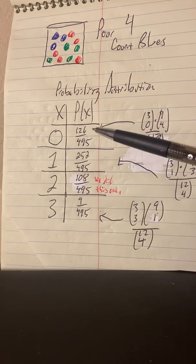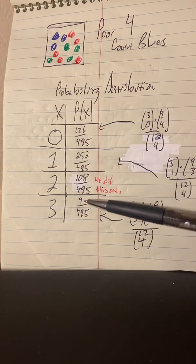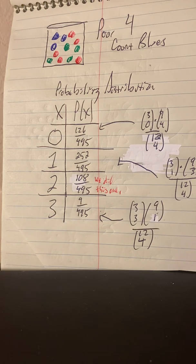Now to check our work, we add this, this, this, and this, and it should be 495 over 495 because the probability total must be one. And of course it is. Math made Simpson simple at Simpson math.